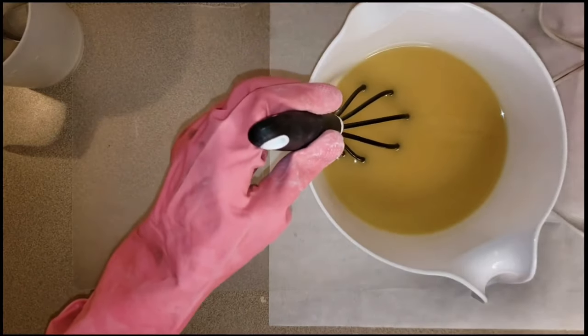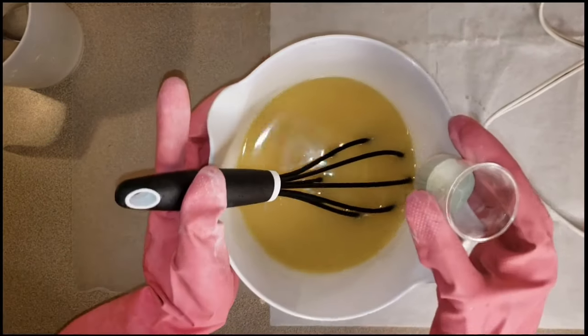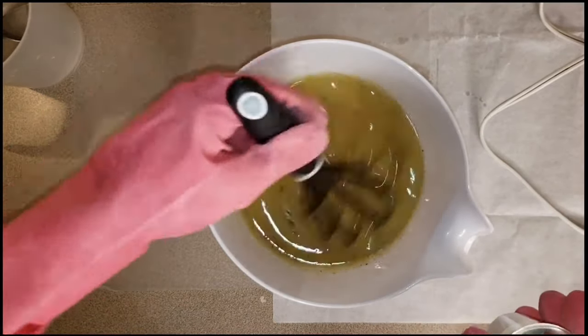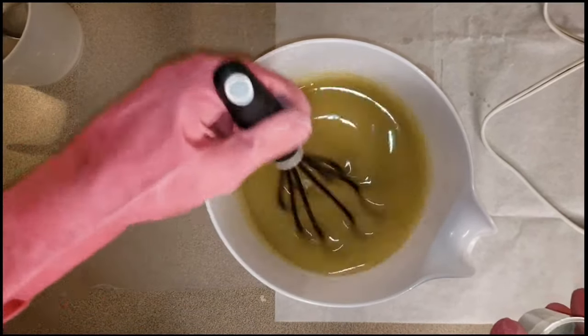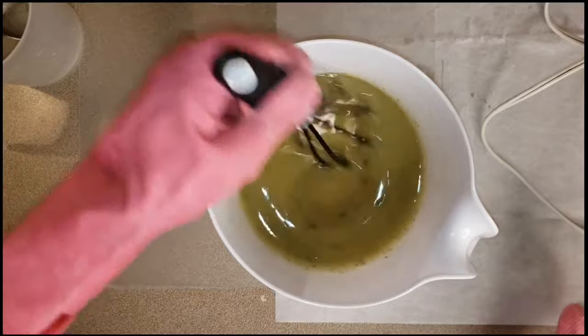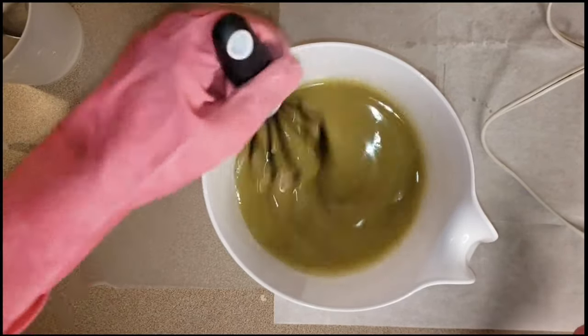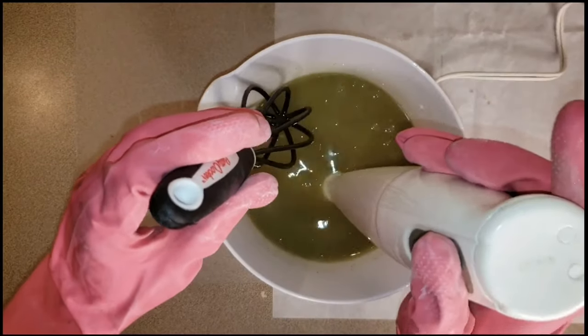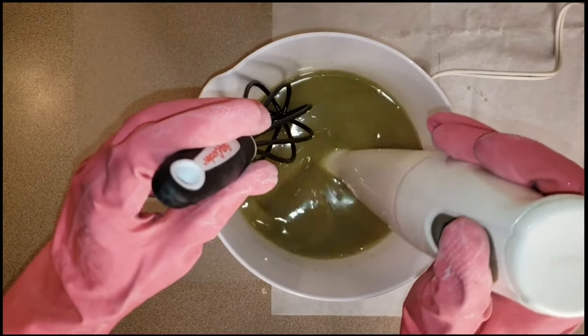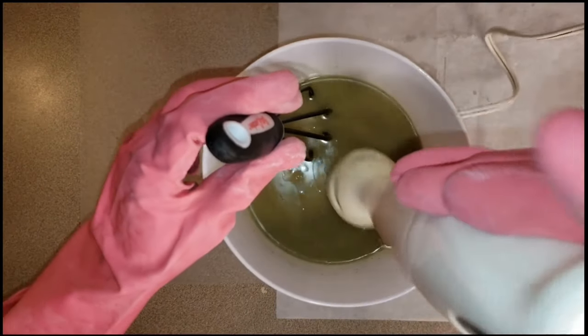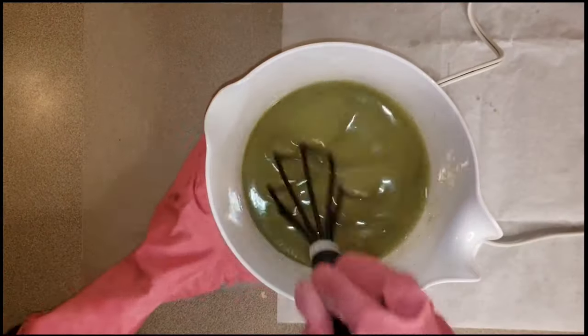To the main batch, add your green zeolite clay and whisk it all in. Once your green zeolite clay is well mixed, use your mixer to give it a nice mix all together just to be sure it's all mixed in.